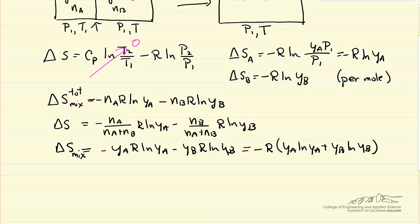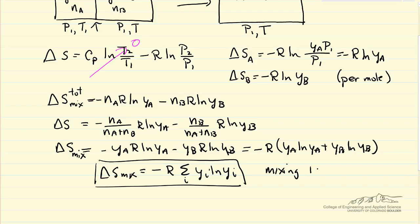So entropy change of mixing for a binary mixture in general, then delta S of mixing would be minus R, the summation of mole fractions. So we can have three or four or five components if we're mixing that constant total pressure. Here's the entropy change of mixing, so mixing, and this of course is only good for ideal gases.